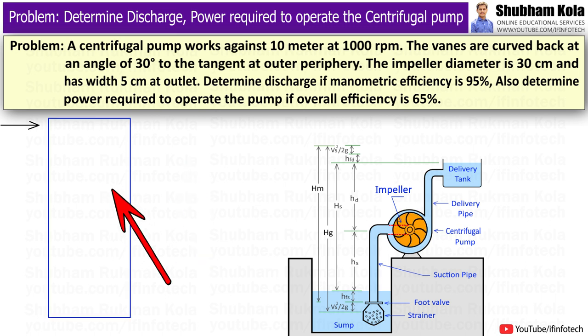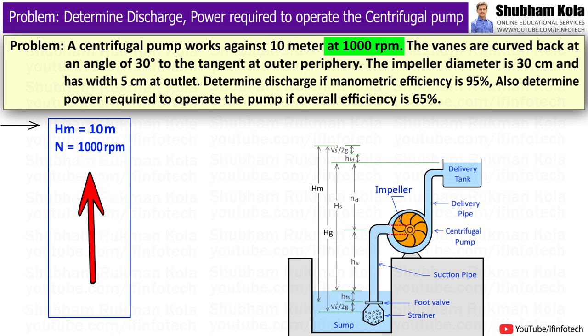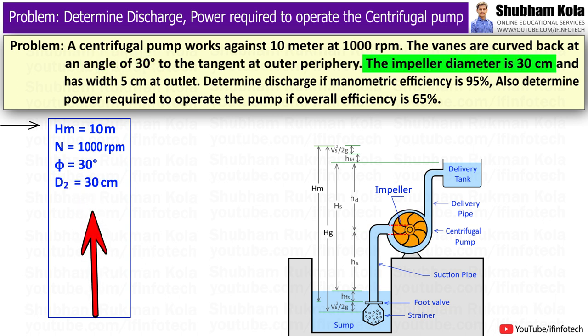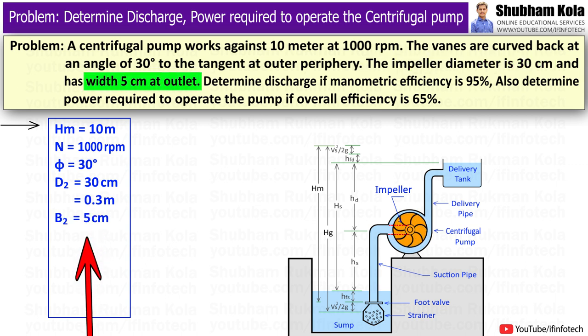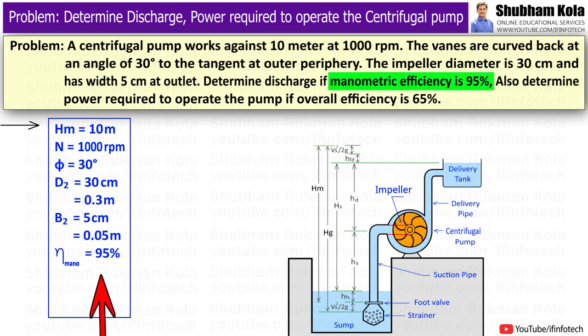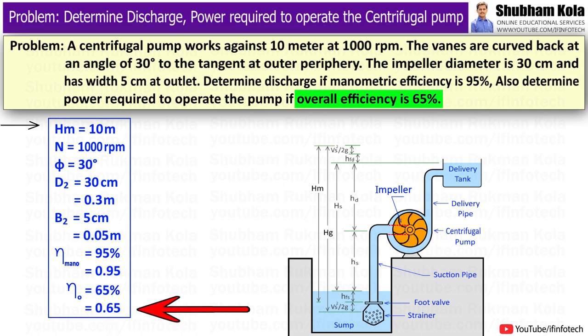To solve this problem, first I will write down the given data provided. Manometric head is given as 10m, with rotational speed of impeller N is given as 1000rpm, with angle at outlet phi equal to 30 degrees. The outer diameter of impeller D2 is given as 30cm, 0.3m, and width of impeller at outlet B2 equal to 5cm, 0.05m. The manometric efficiency is given as 95%, 0.95, and overall efficiency is given as 65%, 0.65.